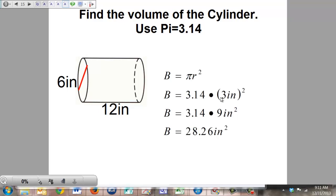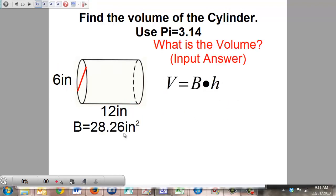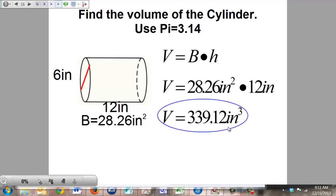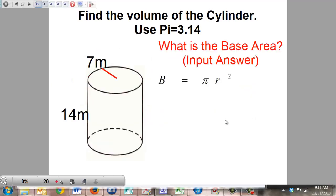But we're not done yet. We've made a good start, but we have more to do. All we've found so far is the area of the circle. Now we need to multiply it times the height of the cylinder to find the volume. So volume equals base area times height. Volume equals 28.26 inches squared times 12 inches, which gives us 339.12 inches cubed. It's really that simple.